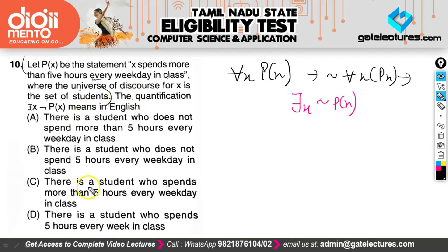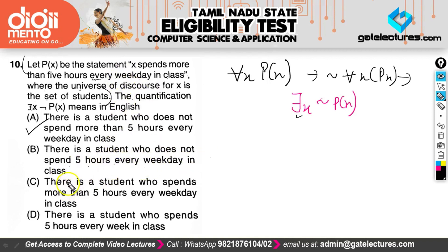So they are asking which sentence represents 'there exists X, not P(X).' The answer is: there exists a student who does not spend more than 5 hours every weekday in class. Option A matches that. The other options either change the statement entirely or remove the negation — for example, one says a student who spends more than 5 hours, which is not the opposite.